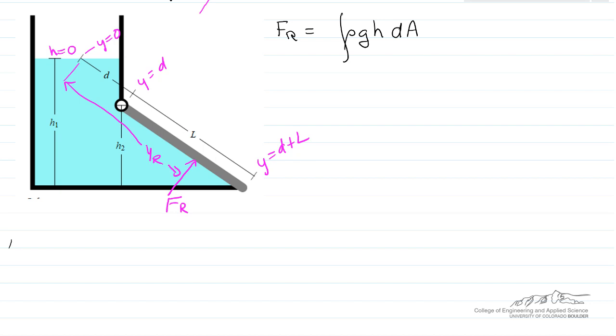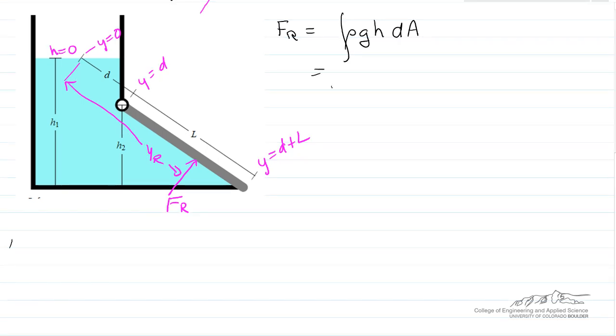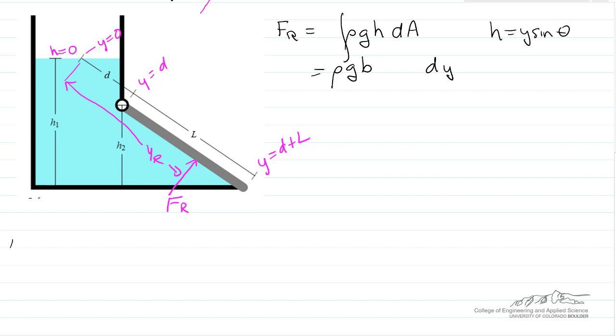Area of the gate is going to be l times the width of the gate, how deep into the screen we would go. So this is equal to ρg times b dy, that'll be dA, and I'm going to replace h by y sin(θ), where θ is this angle here.